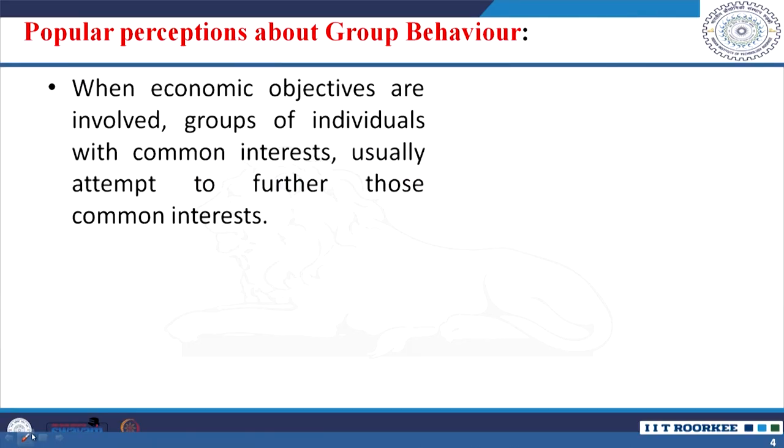What is the common perception regarding group behavior? When economic objectives are involved, groups of individuals with common interest usually come forward to attain that common interest. They self-organize and automatically form a group to attain common group objectives. A historical example is labor unions, where members with common objectives — such as safeguarding labor-related issues — come together under the union to pursue those shared interests.